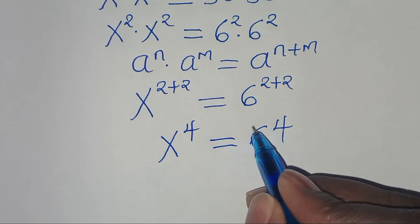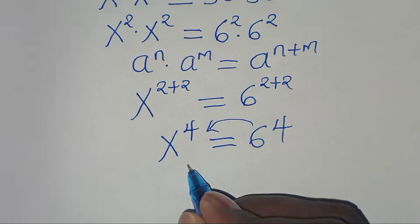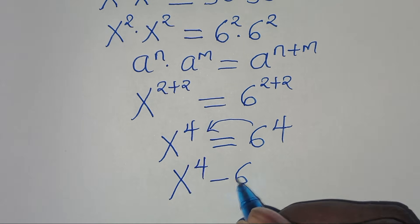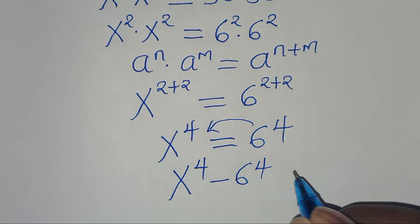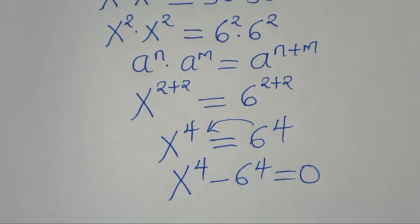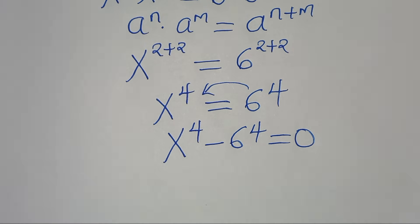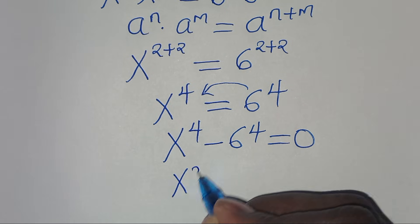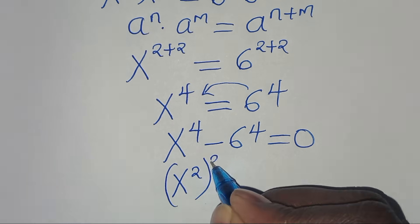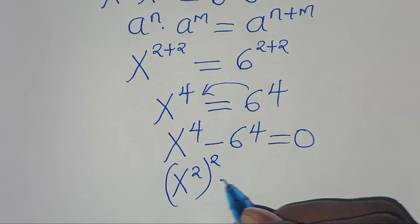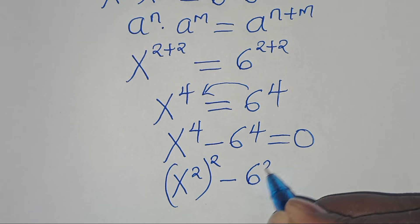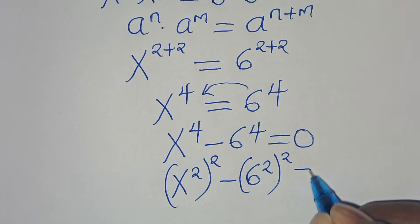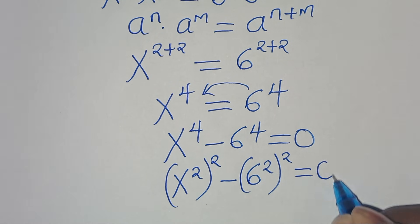So let's take 6 to the power of 4 on the left hand side, so that we have x to the power of 4 minus 6 to the power of 4, this is equal to 0. We can express x to the power of 4 as x squared raised to the power of 2, minus 6 squared raised to the power of 2, this is equal to 0.